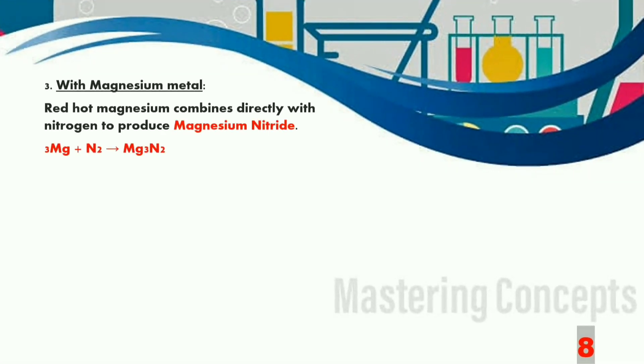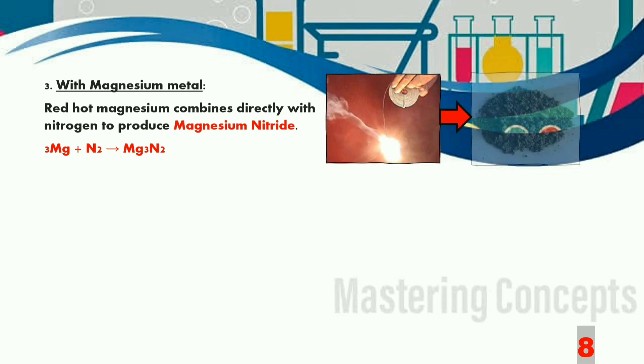Nitrogen gas also combines directly with few metals to form nitrides. When red hot magnesium is heated with nitrogen gas we get magnesium nitride Mg3N2. The next reaction is extremely important.